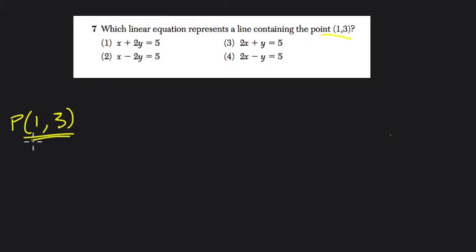And this point has to be on one of the four lines they give us, because the idea is that let's say you have a rough sketch of a coordinate grid, and then we have this point 1, and then 1, 2, 3. So here's our point right here, this point (1,3).